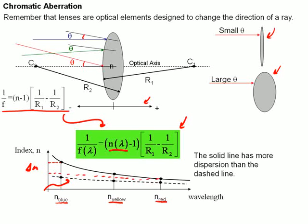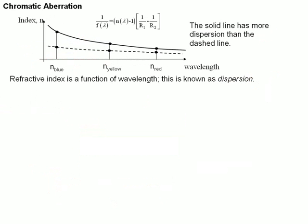But what we see, in fact, is if the index of refraction is a function of wavelength, then the focal length of a lens is itself a function of the wavelength. And so we would expect different colors of light to focus in different places.